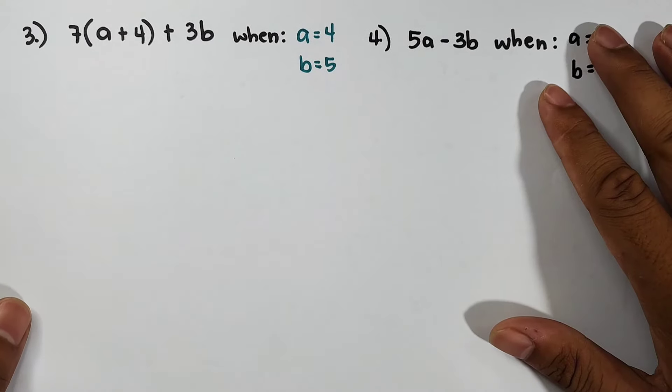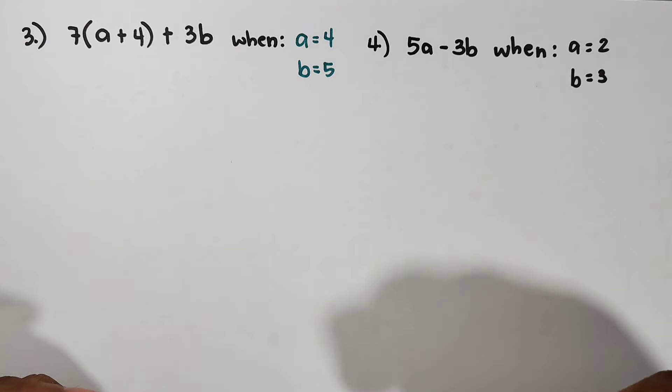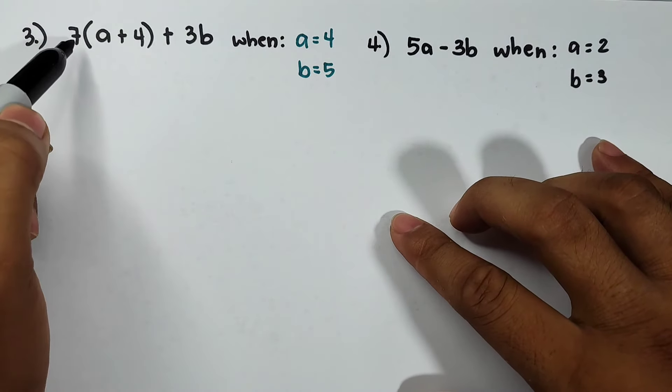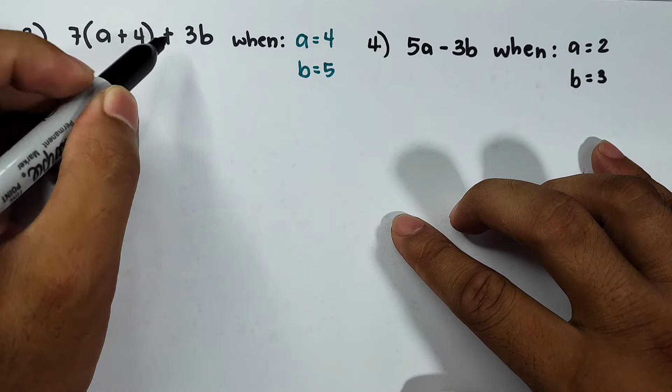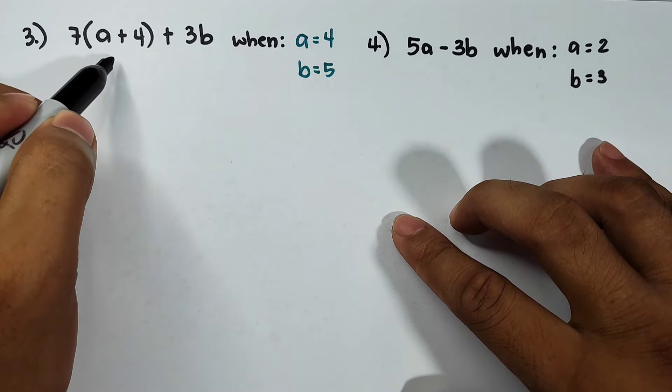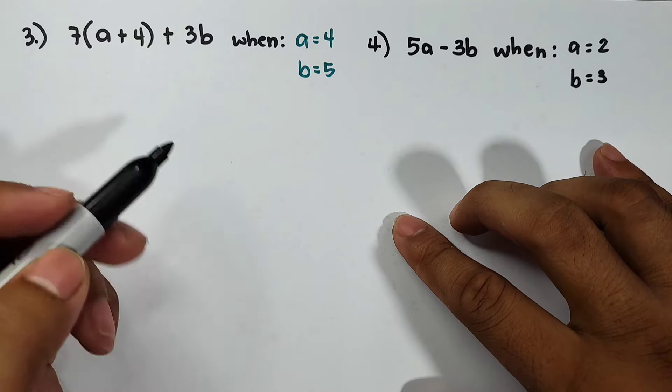For item number 3, I am using right now the variables a and b. What we have here is 7 times (a plus 4) plus 3 times b. You don't need to use the distributive property. You can directly substitute the values like this.